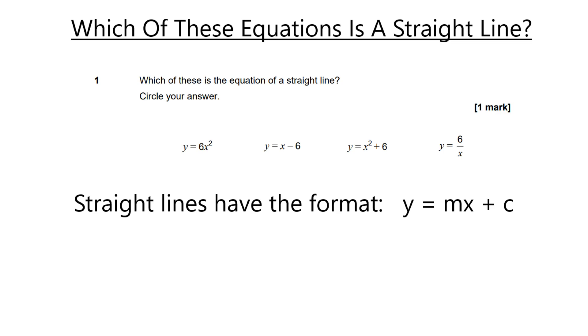If you want to know the answer, the answer is going to be y is equal to x minus 6. And that's because we've got the y, we've got the equals, the mx is just x, so m is just 1 in this case, and then c is going to be minus 6. And there you have it. That's how you know that is going to be a straight line because it's in the same format.